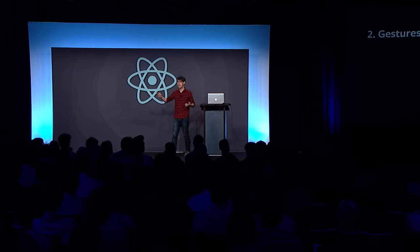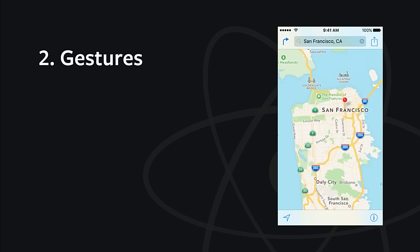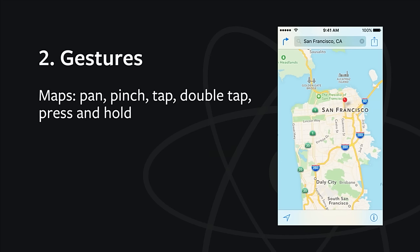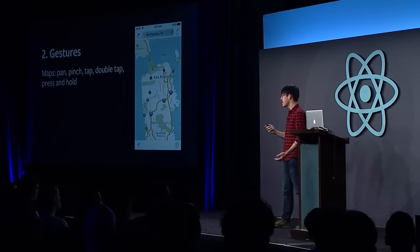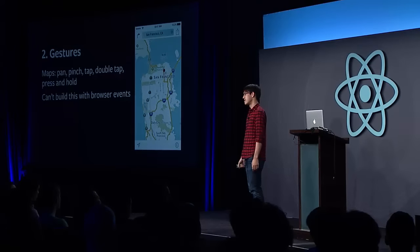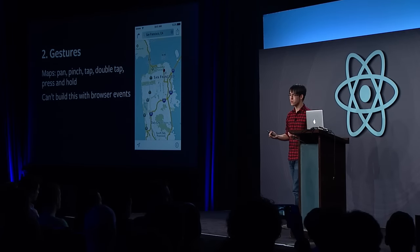The Apple Maps app looks and feels pretty simple when you interact with it. But if you look at all the gestures happening, there's a bunch: you can drag across the screen to pan the map, pinch two fingers to zoom in or out, tap a pin to see more information, double tap to zoom in, and press and hold to drop a new pin — and there are even a couple more. On the web, it's basically impossible to build this using just touch start, touch move, and touch end — those aren't the hooks you want. You need a real gesture system on top of that to interpret the user's finger movements.